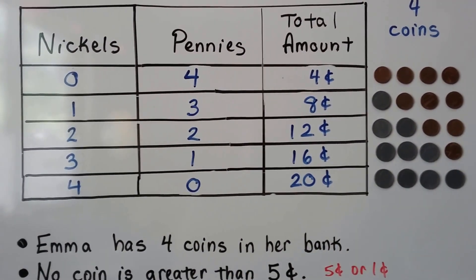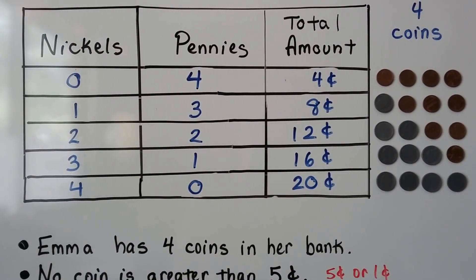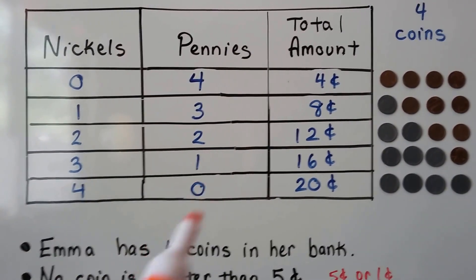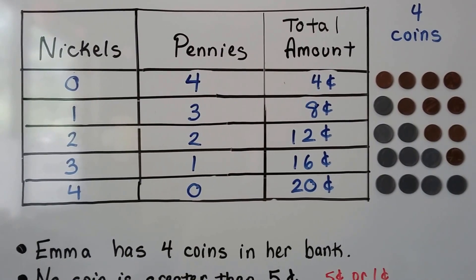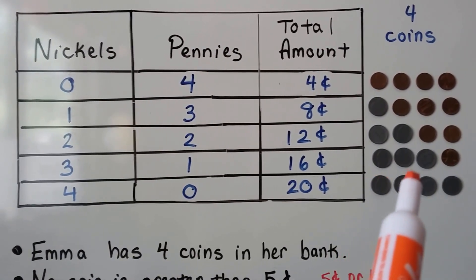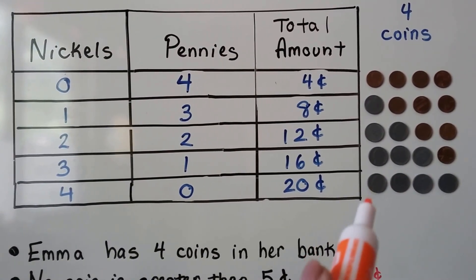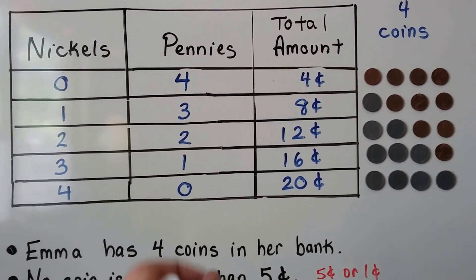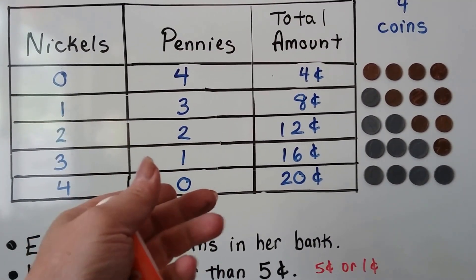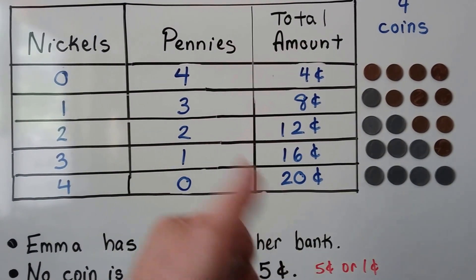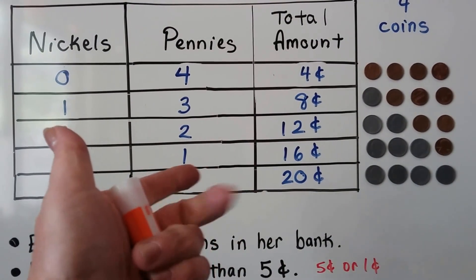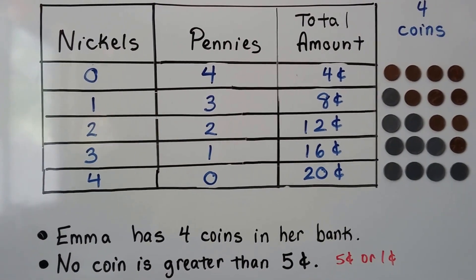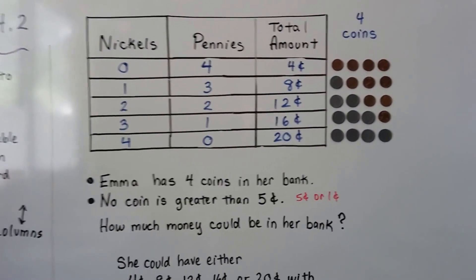She'd have sixteen cents. And if she had four nickels and no pennies, that would be four coins and she would have twenty cents: five plus five is ten, plus five is fifteen, plus five is twenty cents.